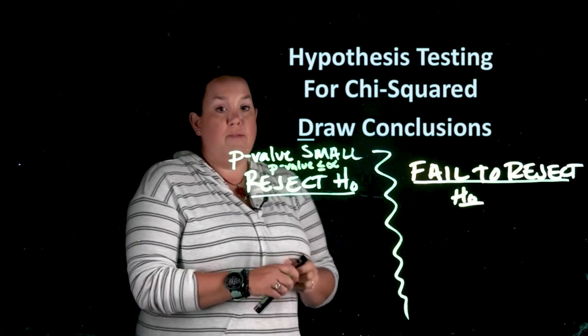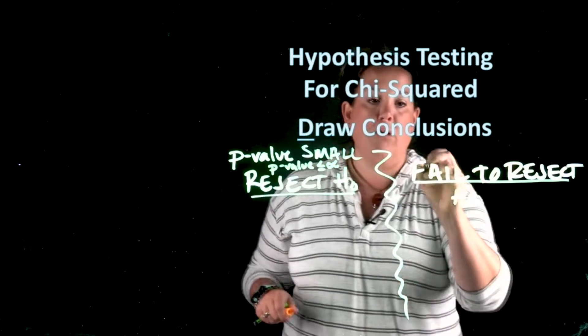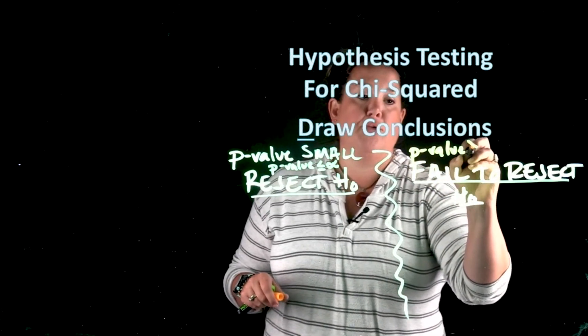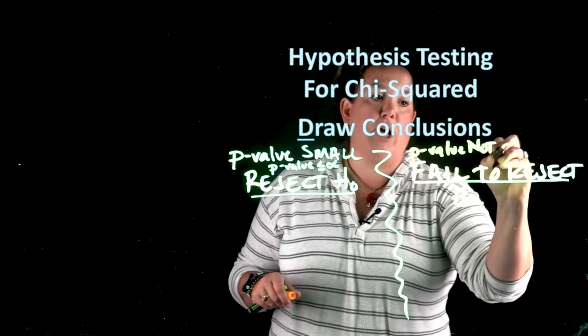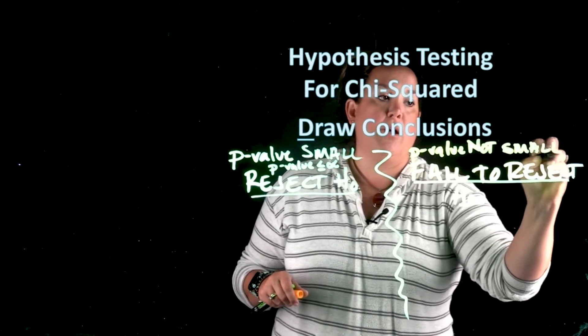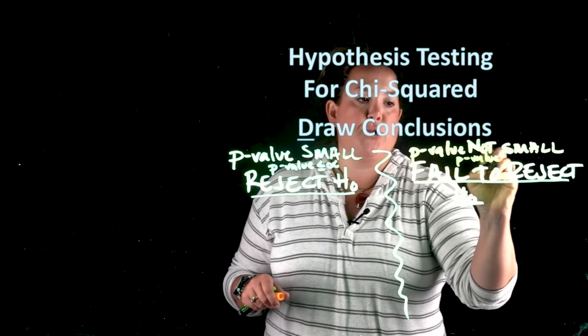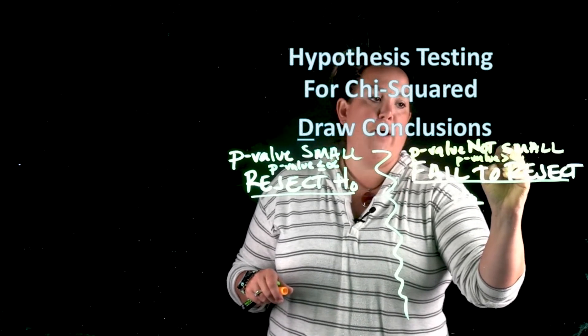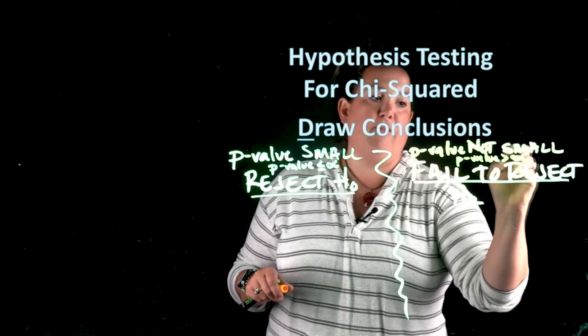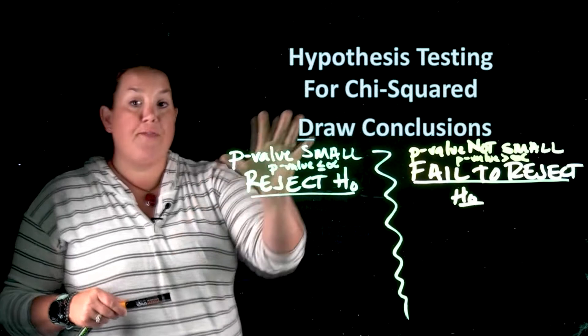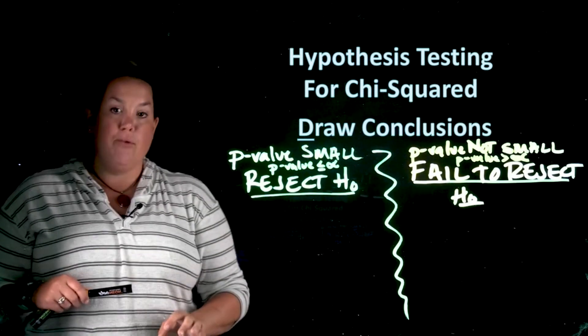Having a p-value that is not small will cause you to fail to reject the null. And essentially that happens if you need to, when a p-value is greater than the level of alpha, which is that level of significance. So that's the decision that we left off with with the execute calculations.